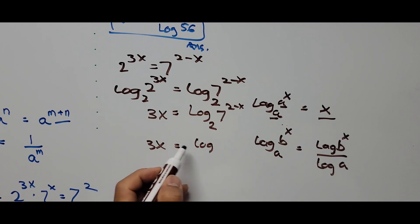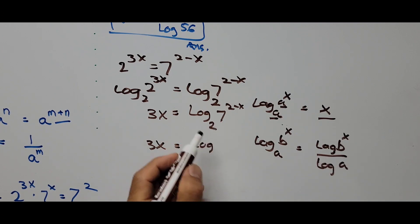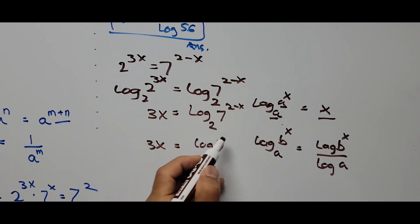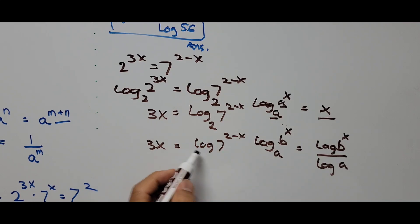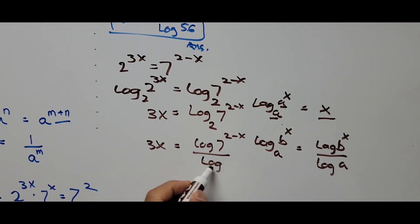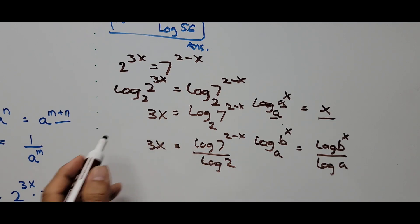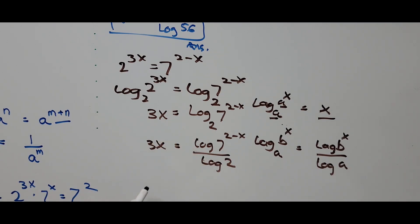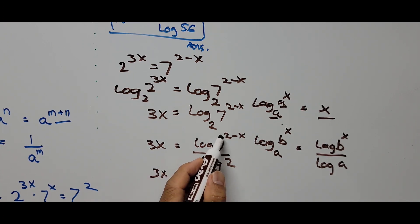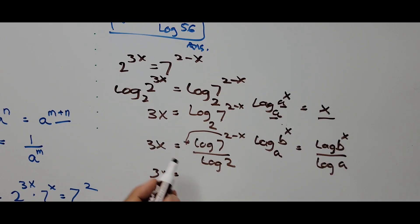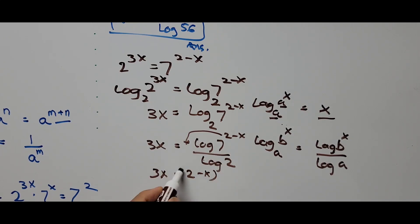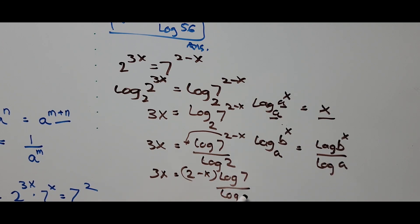Simplifying further: 3x equals the exponent (2 minus x) brought to the front, times log of 7, divided by log of 2.